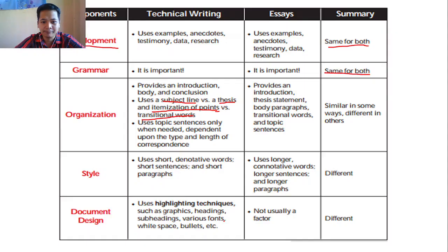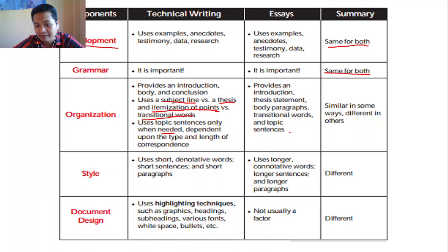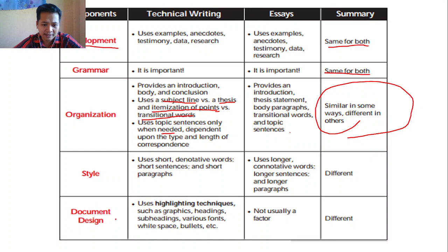For essay, we use a thesis statement and transitional words like 'moreover,' 'furthermore,' 'in addition.' In technical writing, points are itemized — like a list — rather than connected with transitional phrases. Topic sentences are used only when needed in technical writing, depending on the type and length of correspondence. For essay, there's an introduction, thesis statement, body paragraphs with transitional words, and a topic sentence in each paragraph. So there are similarities but also differences.